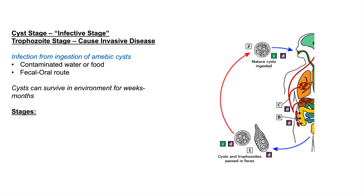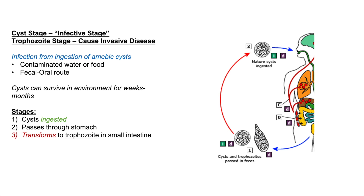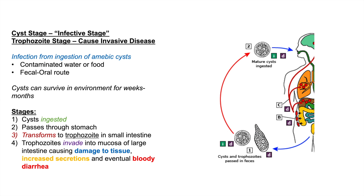There are several stages of infection. The cysts are the infective stage — what we ingest from the environment. When these cysts pass through the stomach, they transform into trophozoites in the small intestine. The trophozoites then invade the mucosa of the large intestine, where they cause damage to the tissue. This leads to increased secretions, inflammation, edema, and eventually bloody diarrhea as a result of all that tissue damage.